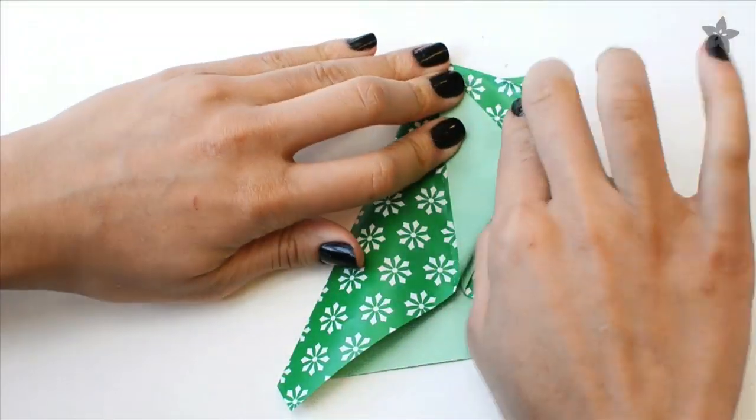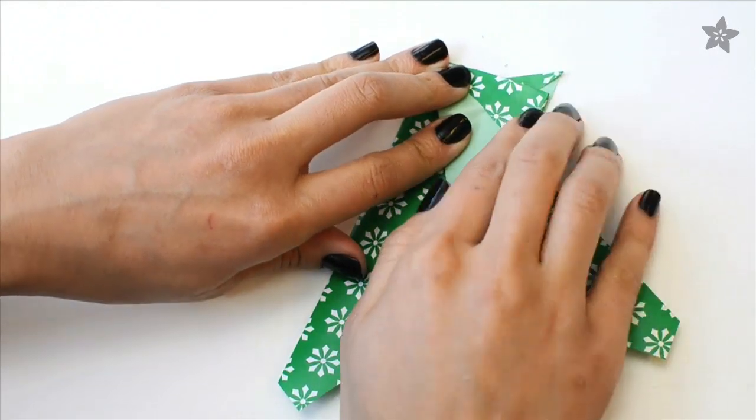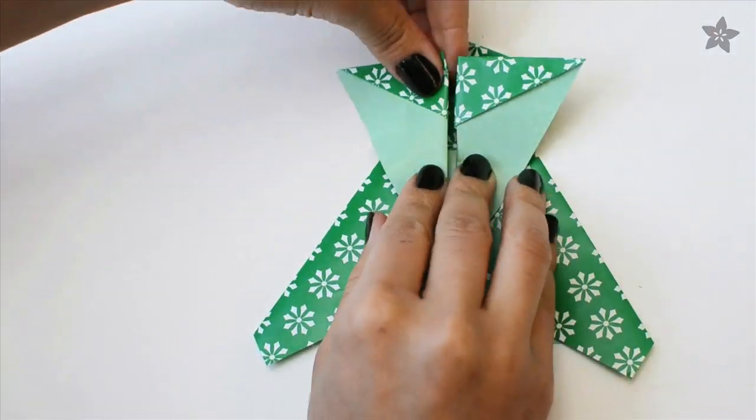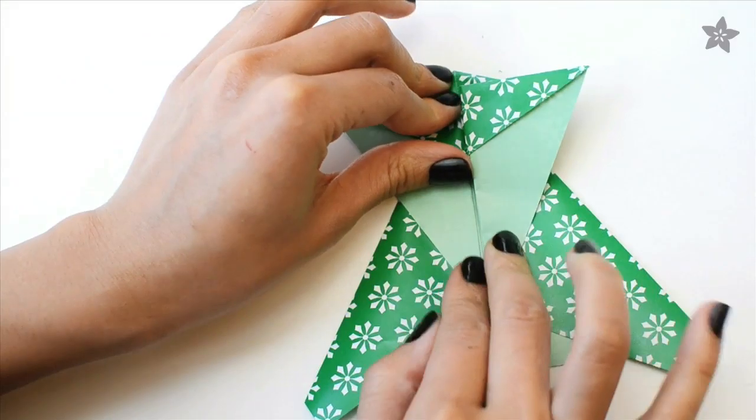Repeat the whole process on the other side. Fold it up to meet itself, then crease the middle triangle to flatten it out.